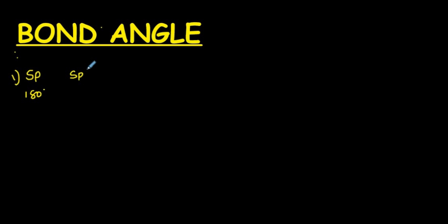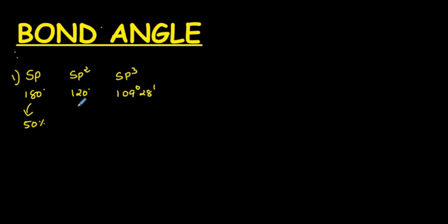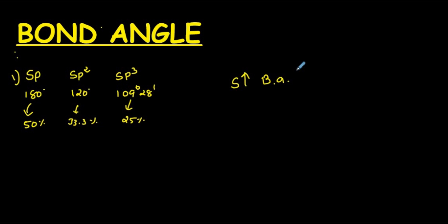SP2 hybridization gives a bond angle of 120 degrees, and SP3 hybridization gives a bond angle of 109 degrees 28 minutes. In SP hybridization, the S character is 50%; in SP2 it is 33.3%; and in SP3 it is 25%. So as the S character increases, the bond angle increases.